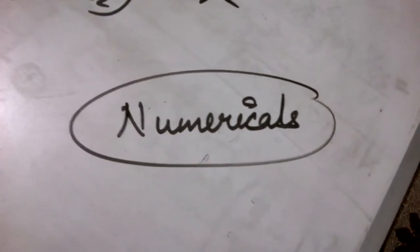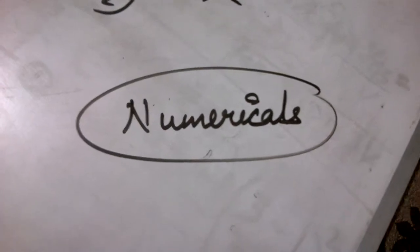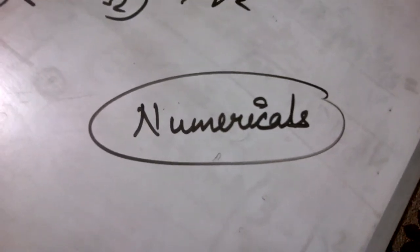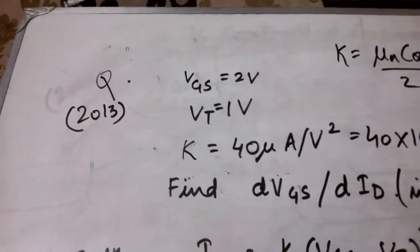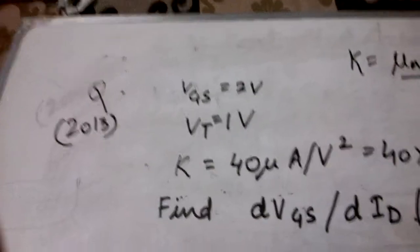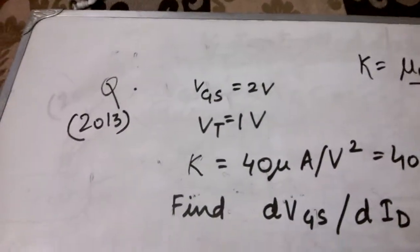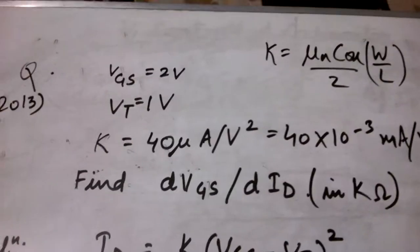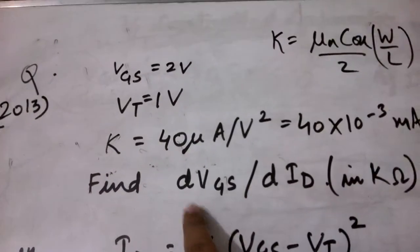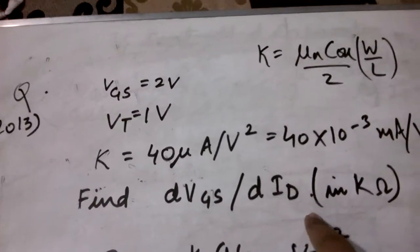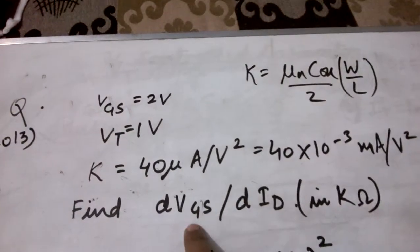Welcome to the numerical series of VLSI design for practice for GATE exam. Next we do a numerical similar to one asked in 2013. In this numerical, VGS, VT, and K were all given to you. We have to find out dVGS/dID in kilo ohms. Basically V upon current is your resistance, so the unit of resistance is in ohms, but we have to give the result in kilo ohms.